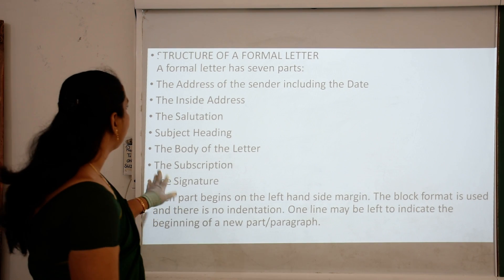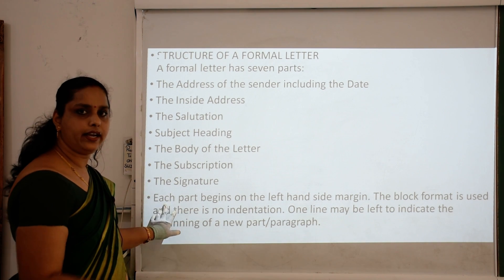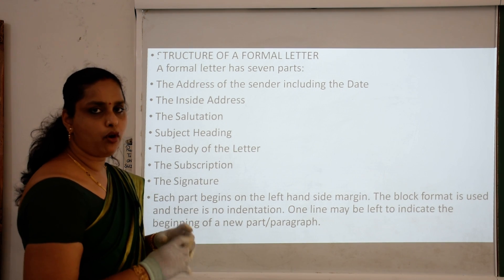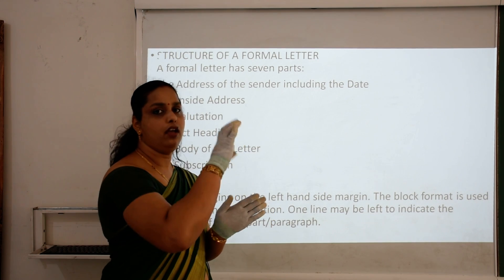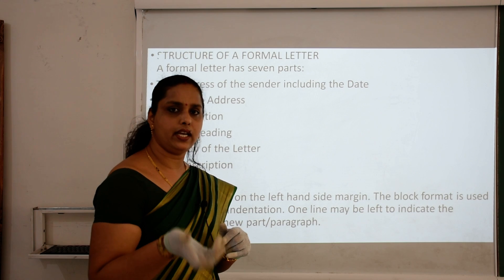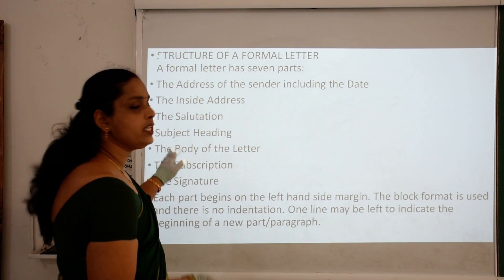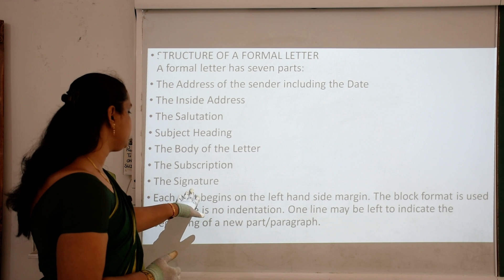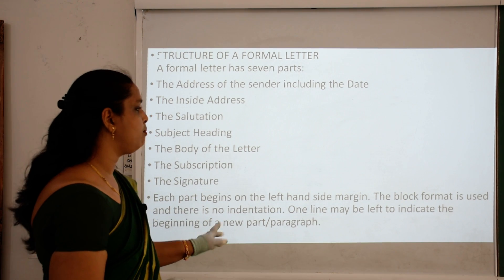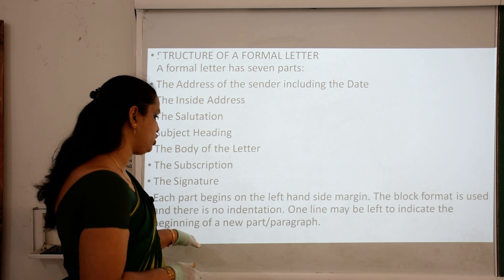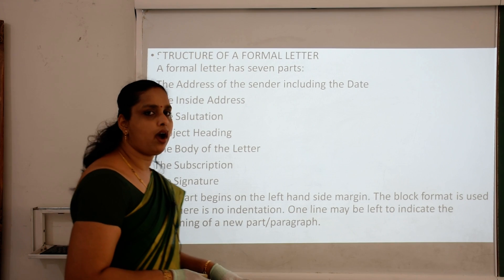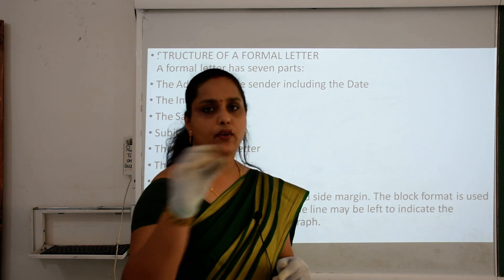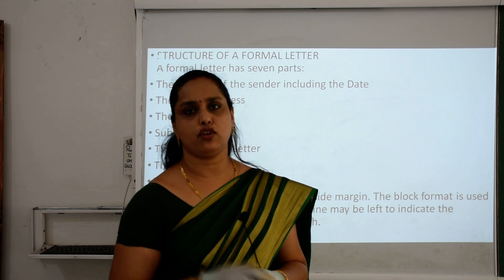Now, the structure of a formal letter — a very important thing. A formal letter has 7 parts: first is the address of the sender including the date; then inside address; then salutation; subject/heading; body of the letter; subscription; and signature. Each part begins on the left-hand side margin. The block format is used and there is no indentation. One line may be left to indicate the beginning of a new part or new paragraph.